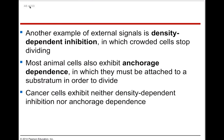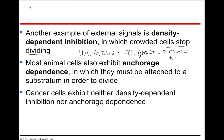Another example of external signals is density-dependent inhibition, in which crowded cells stop dividing. Density is how many cells are in a given area — if you have a whole lot of cells in that area, it creates a kind of pressure that makes cells stop dividing. When you have uncontrolled cell growth, that's called cancer — whether a tumor or actual cancer. Density-dependent inhibition essentially says: there are a lot of cells here, we don't need any more right now.